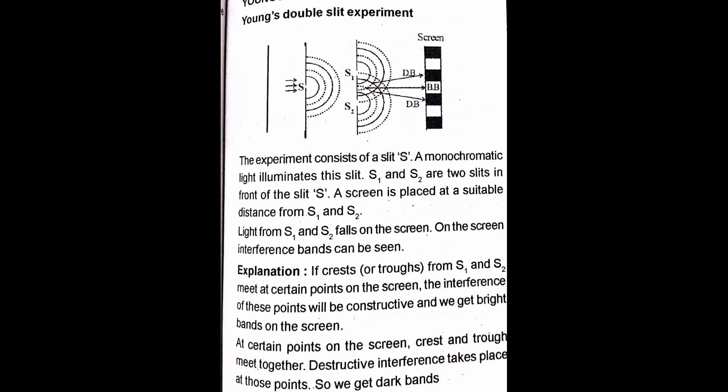Now we have an important question: explain Young's double slit experiment to produce an interference pattern and derive the expression for bandwidth. In Young's double slit experiment, coherent sources are made by placing a monochromatic light source near a single slit S, and then two slits S₁ and S₂ in front of it. The light from S acts as the coherent source for S₁ and S₂, which have the same amplitude, frequency, wavelength and phase.